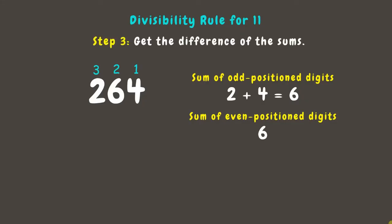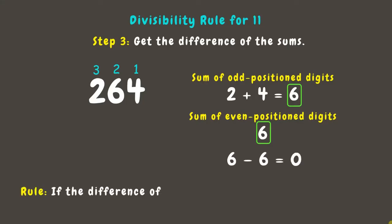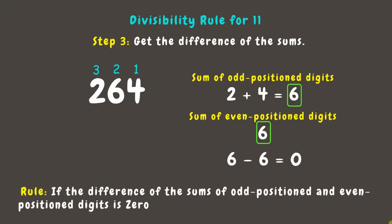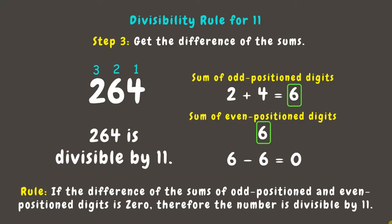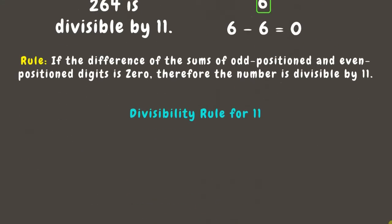Final step is to subtract the sums: 6 minus 6, which equals zero. Now according to the rule, if the difference is zero, the number is divisible by 11. Therefore, 264 is divisible by 11. Let's move on to the next example.